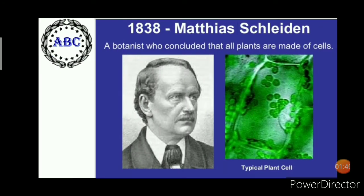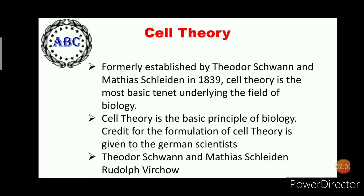In 1838-39, Schleiden suggested that every structural part of a plant was made up of cells or the result of cells. In 1839, Theodor Schwann stated that along with plants, animals are also composed of cells or the product of cells in their structures.